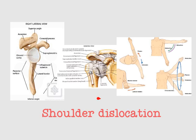When we say shoulder dislocation, we mean glenohumeral joint dislocation. The glenohumeral joint is the joint between the head of the humerus and the glenoid cavity of the scapula.